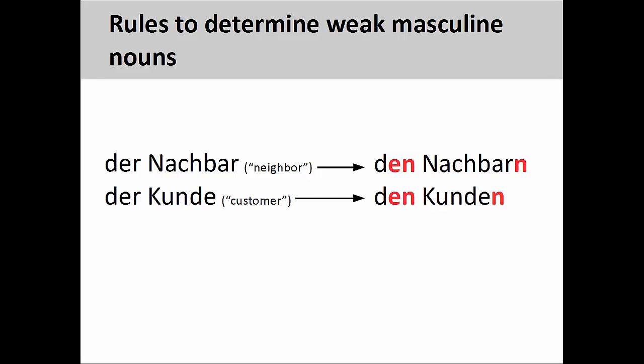First, some nouns indicating male beings, such as der Nachbar — the neighbor — and der Kunde — the customer — may be weak masculine nouns.